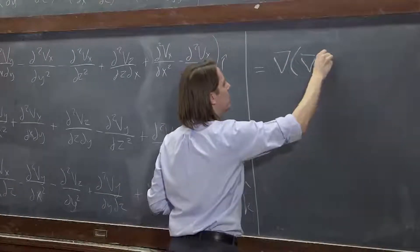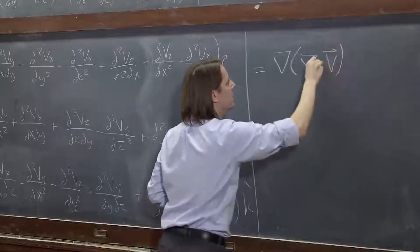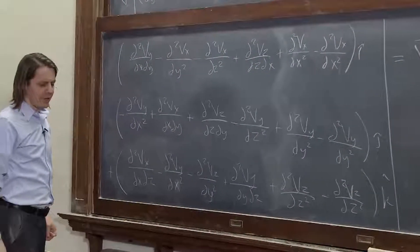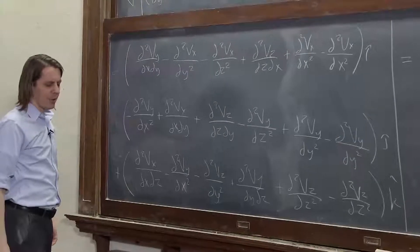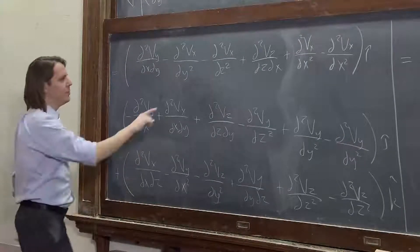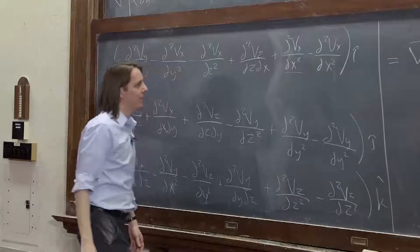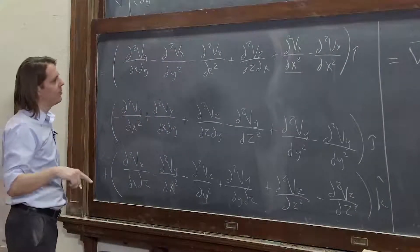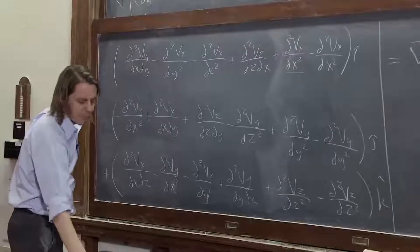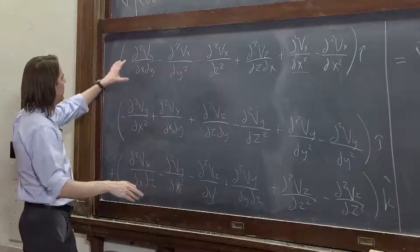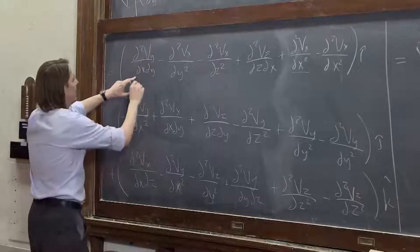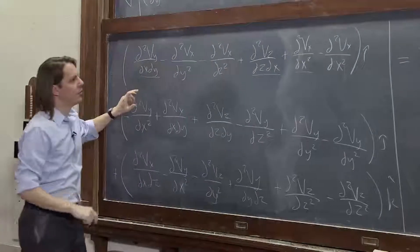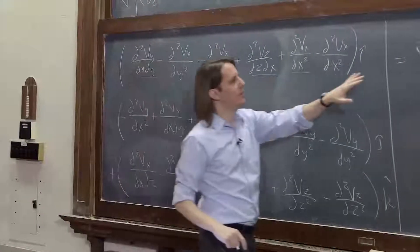Okay. What did del, del dot v look like? Well, for each component on the x component, it was d²vx/dx². That's why we needed that one. And then it was vy, also second derivatives with x and y and x and z. So vy with x and y and vz with x and z. So those are the three x components of this.